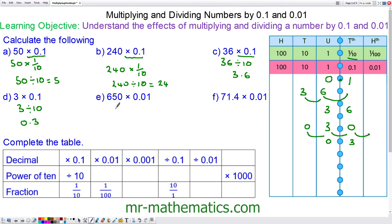For question E we have 650 times 1 hundredth. So 1 hundredth is 0.01. And that becomes 650 divided by 100. Which we can check in our place value table. Every number moves across two places. So it becomes 6.5.